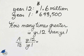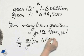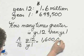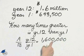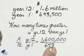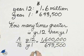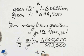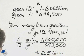Now $1.6 million means $1,600,000. So $1,600,000 divided by $643,500 — this is approximately 2.5 times greater.